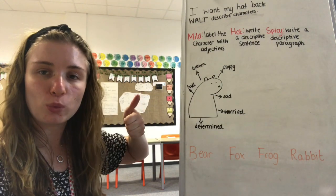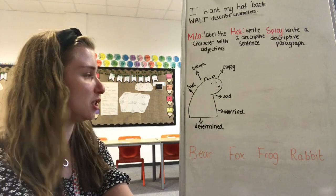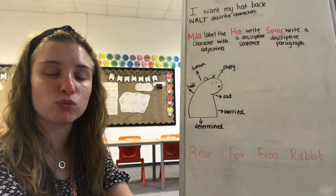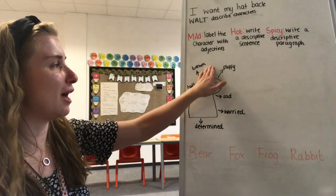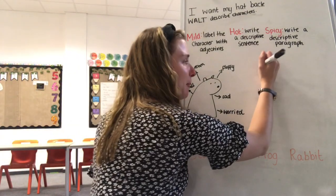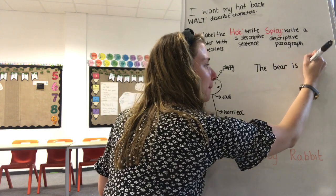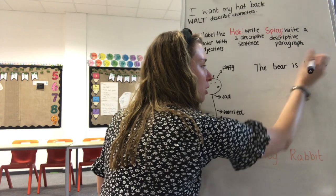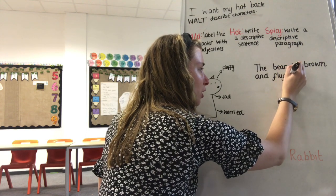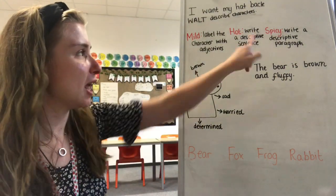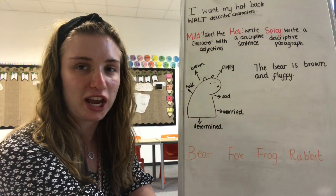If you're happy with that, well done — you've done your mild. If you want to challenge yourself, let's write a descriptive sentence. We are going to write one sentence using two of our adjectives. Let's use brown and fluffy: 'The bear is brown and fluffy.' So if you just want to write one sentence, that is hot. But if you want to challenge yourself and write a few more, we're going to do spicy and write a descriptive paragraph.